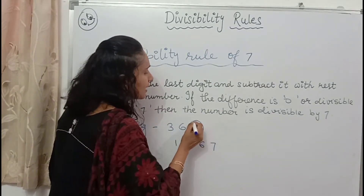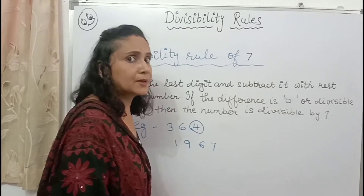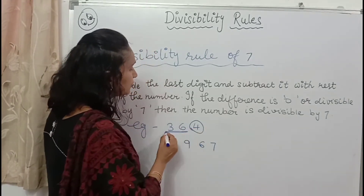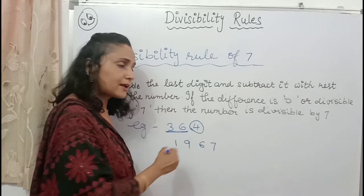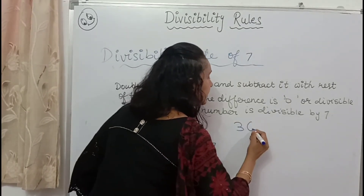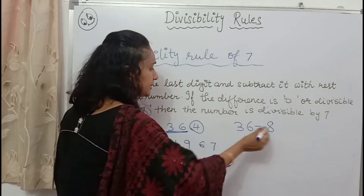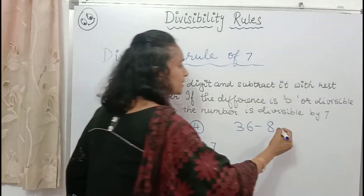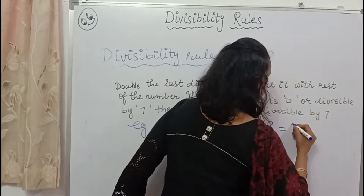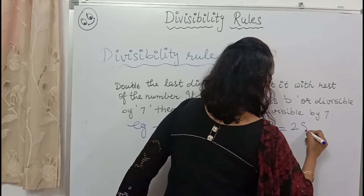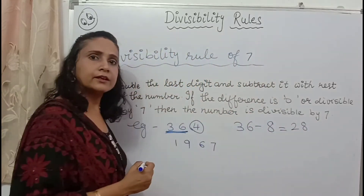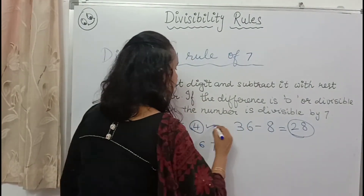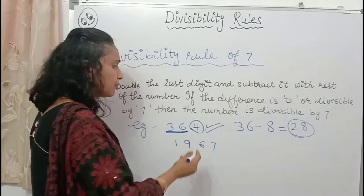This is our last digit. I said we will double the last digit — 4 doubled is 8. Now subtract 8 from the rest of the number. The rest of the number is 36. So 36 minus 8 gives us 28. The difference is 28, which is divisible by 7. So the number 364 is also divisible by 7.